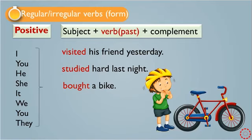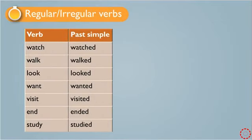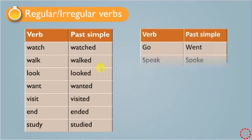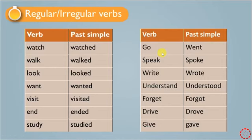Visit and studied are regular verbs, while bought is irregular. Regular verbs are those that take -ed when changed from present to past form — for example: watch→watched, walk→walked, look→looked, want→wanted, visit→visited, study→studied. Irregular verbs cannot take -ed and have no specific rule — for example: go→went, speak→spoke, write→wrote, understand→understood, forget→forgot, drive→drove, give→gave.